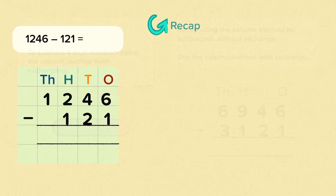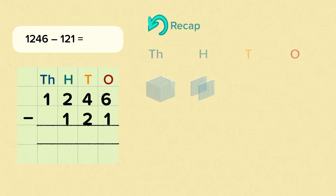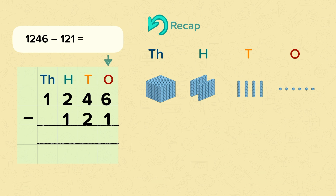So let's recap by solving this calculation: 1246 subtract 121. The first thing that we've done is we've lined up all of the numbers so that they're in the correct column. We use pictures here to help us.